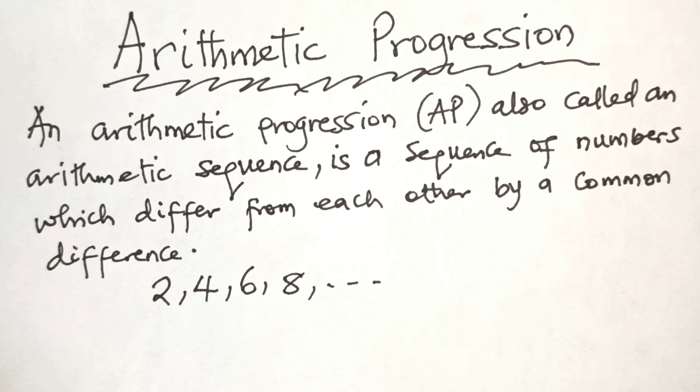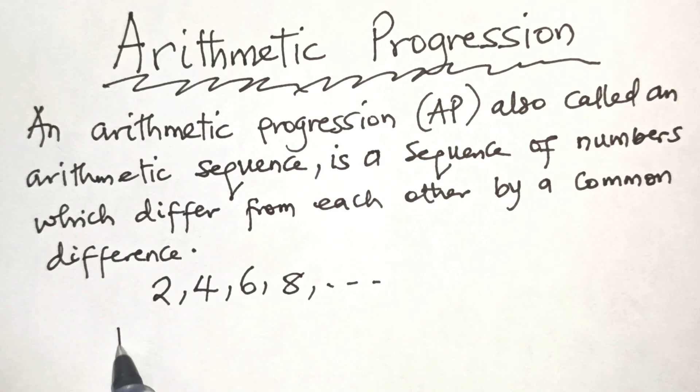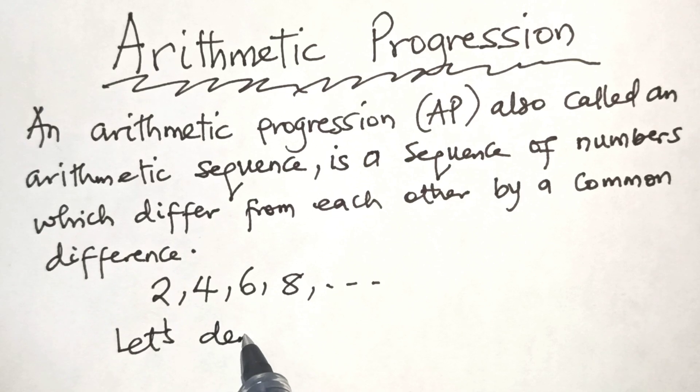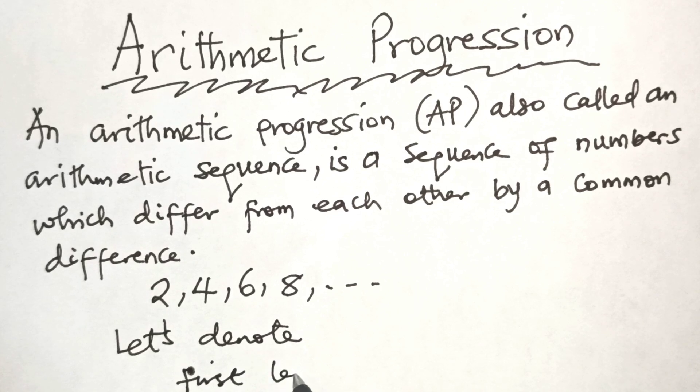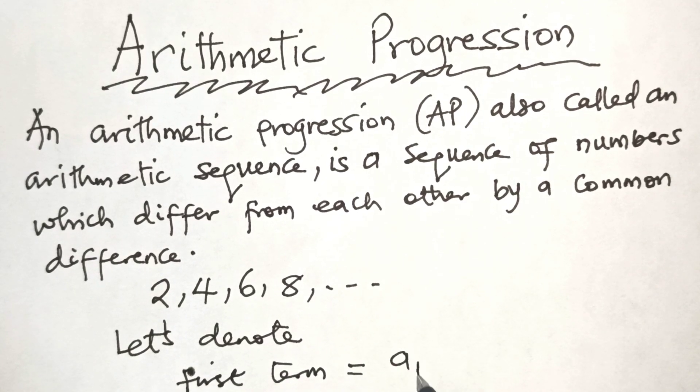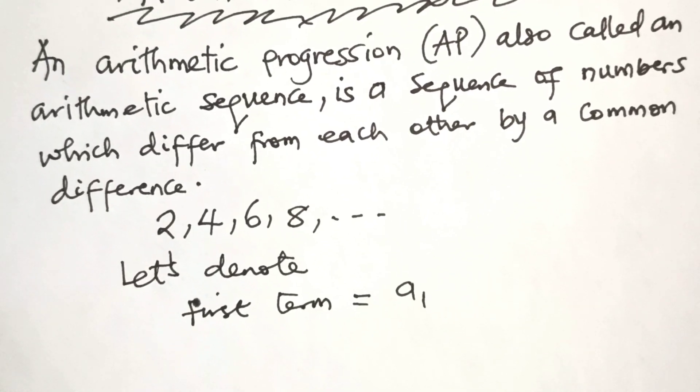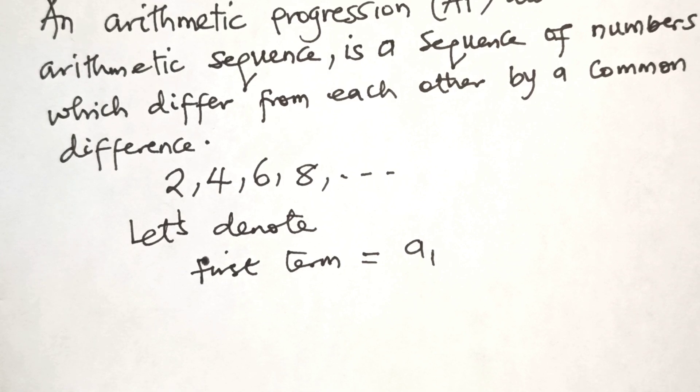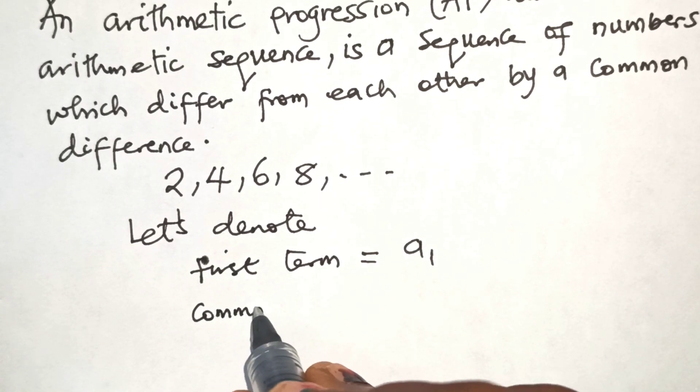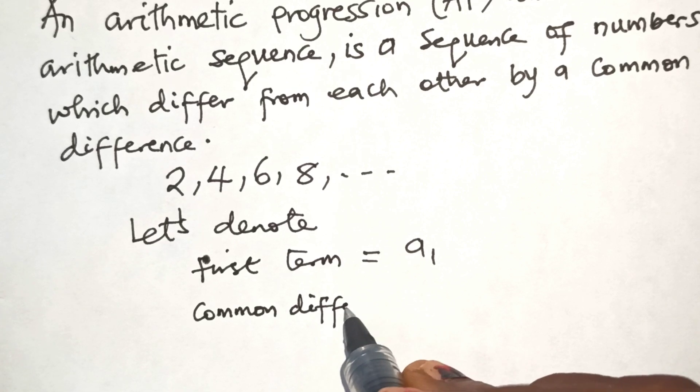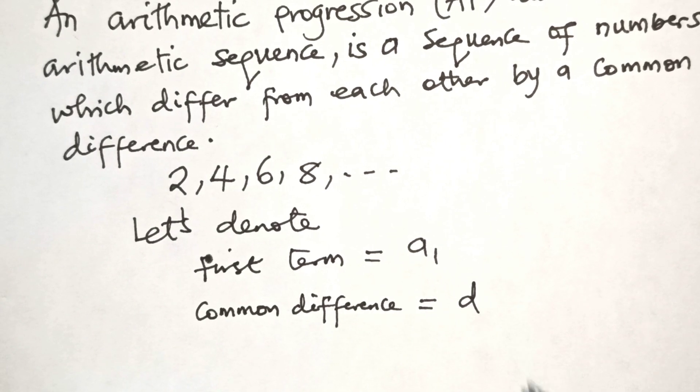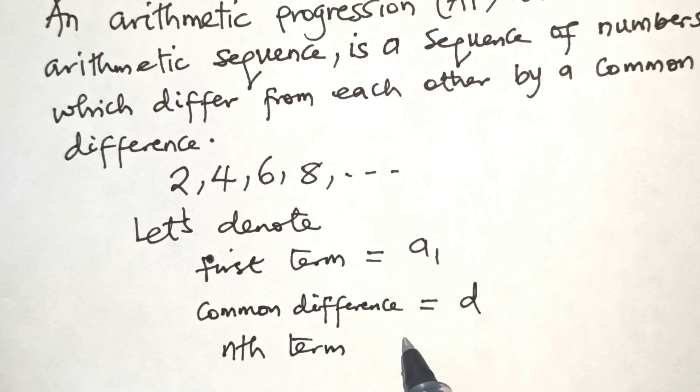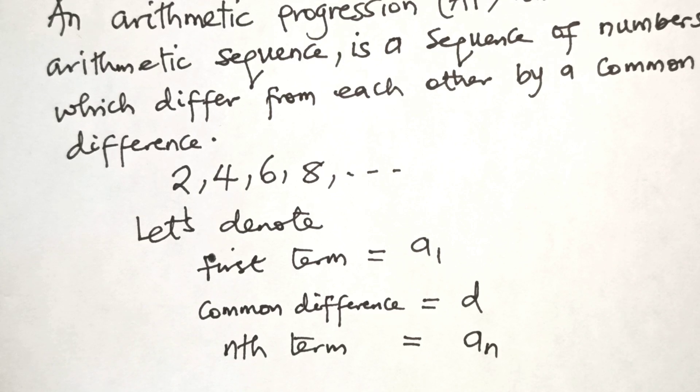Let's denote the first term as A1. So our first term, we will use A1 to represent it. Then, the common difference, let it be D. And let the nth term be equal to AN or A sub N.